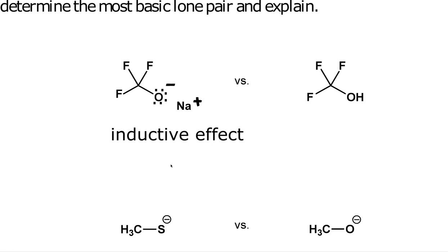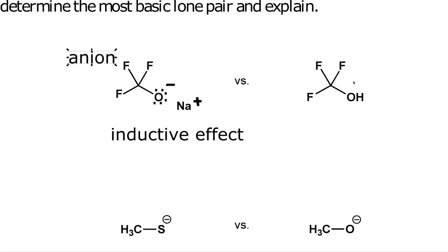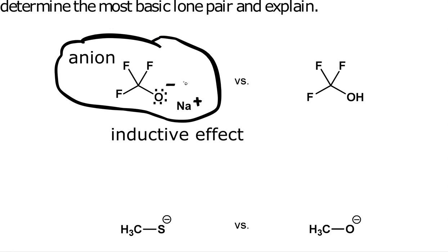However, the inductive effect is extremely weak — it is not that much of a factor. Since this oxygen has a negative formal charge, it's an anion. And this oxygen over here has a hydrogen connected to it — it's a hydroxyl group. We're just comparing relativity between the two: which one is more basic relative to the other. The inductive effect is not really that big of a factor. Since this one has a negative formal charge and is an anion, that's more unstable. This oxygen is neutral. So even though the inductive effect is a stabilizing mechanism, this anion is more basic than the neutral oxygen.